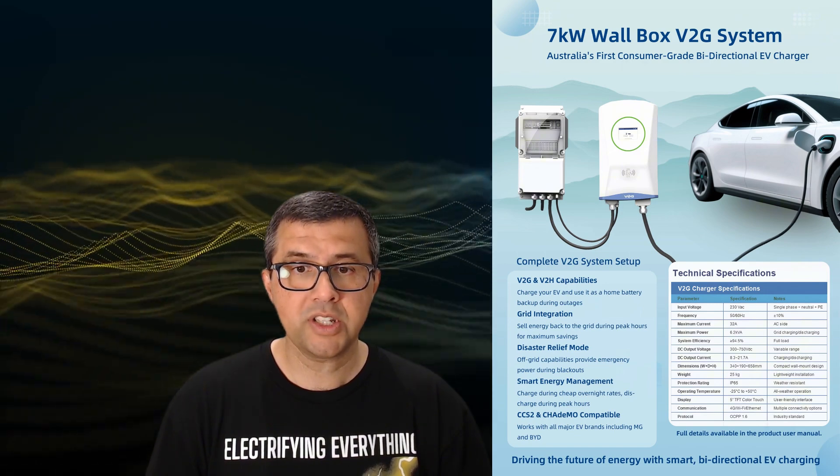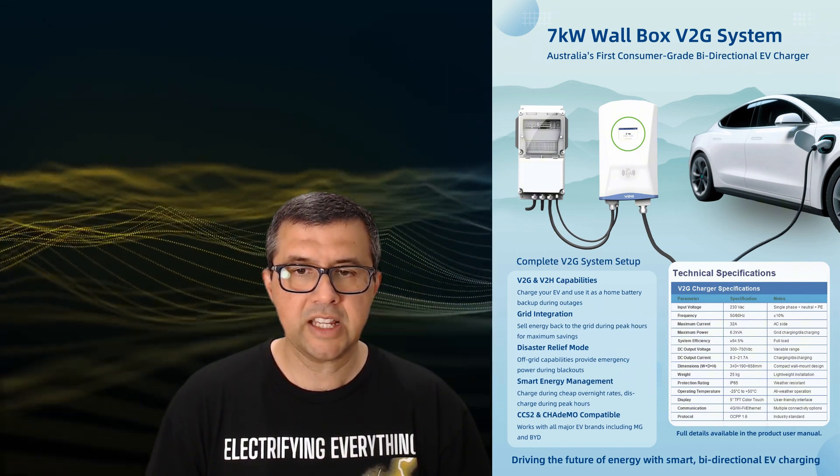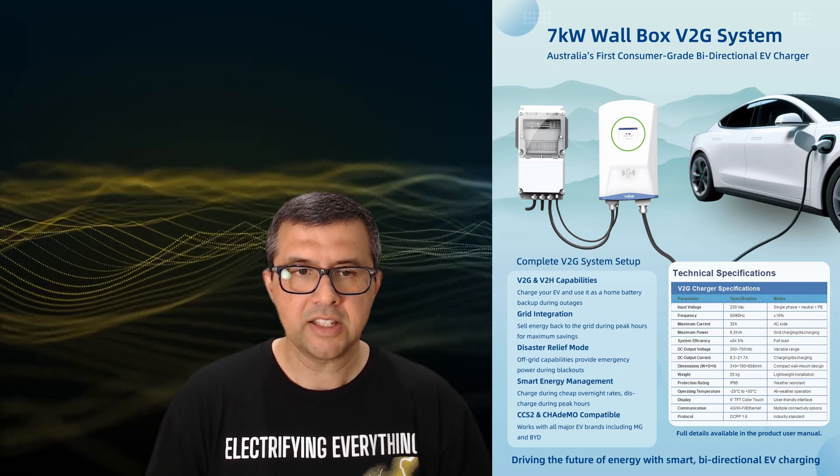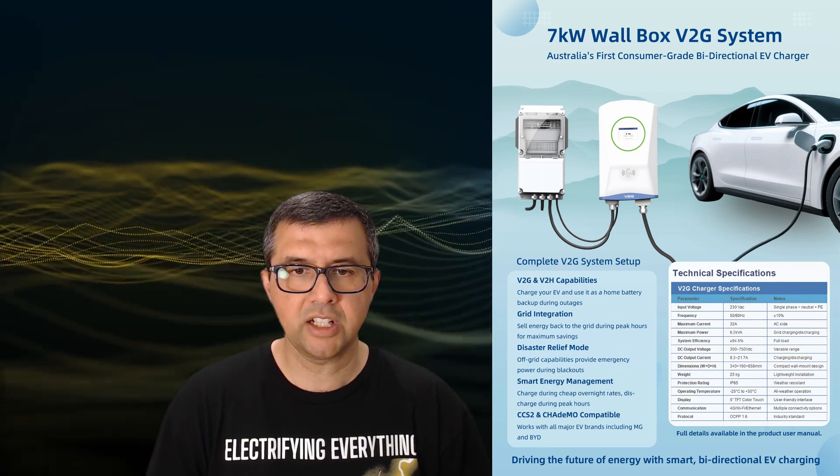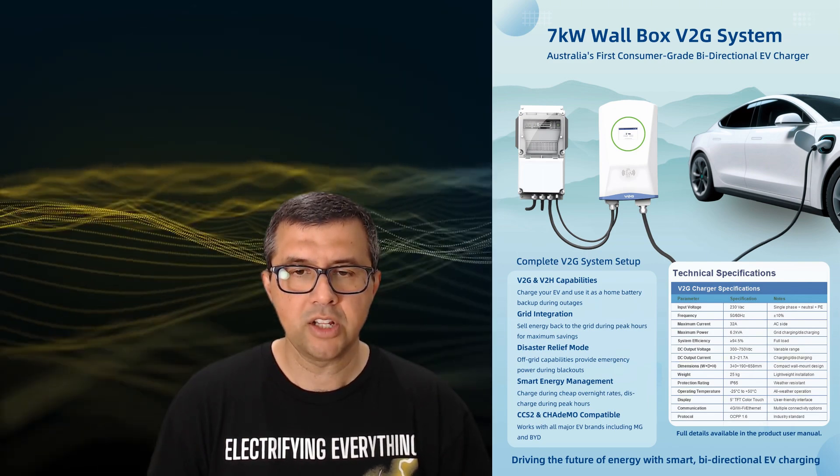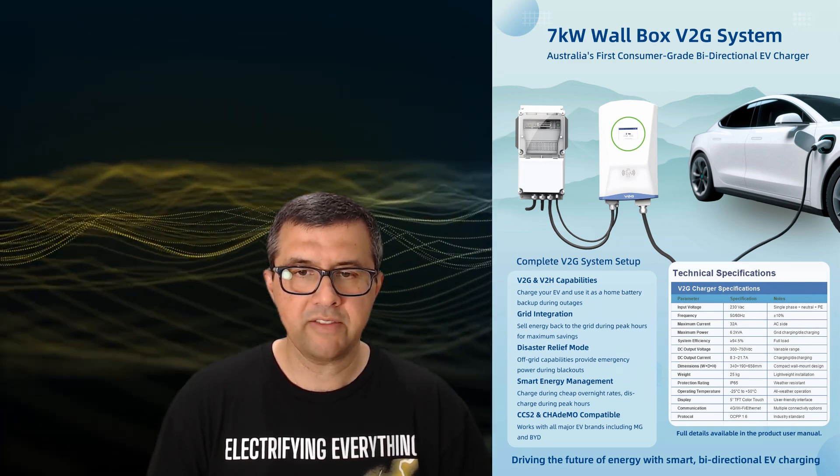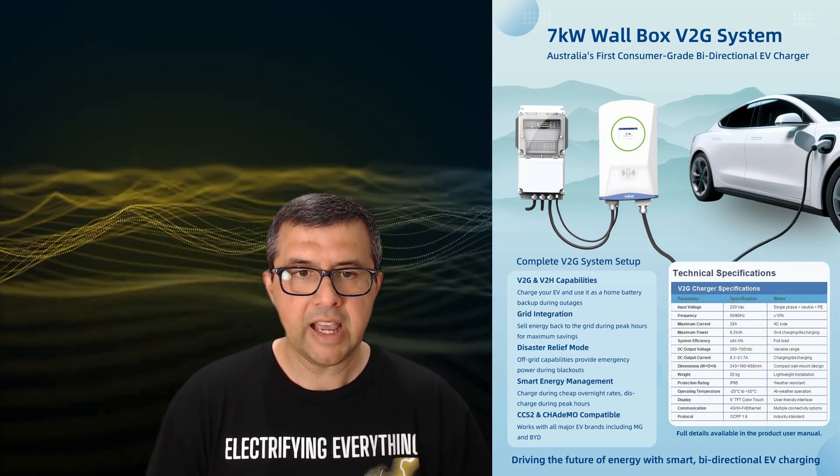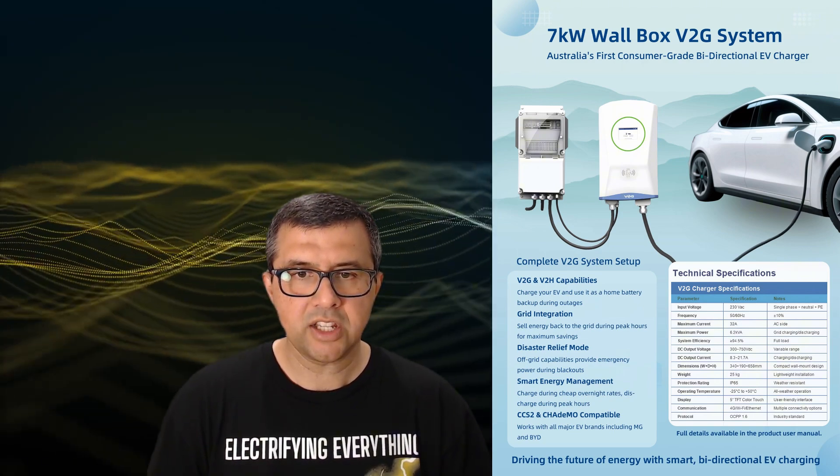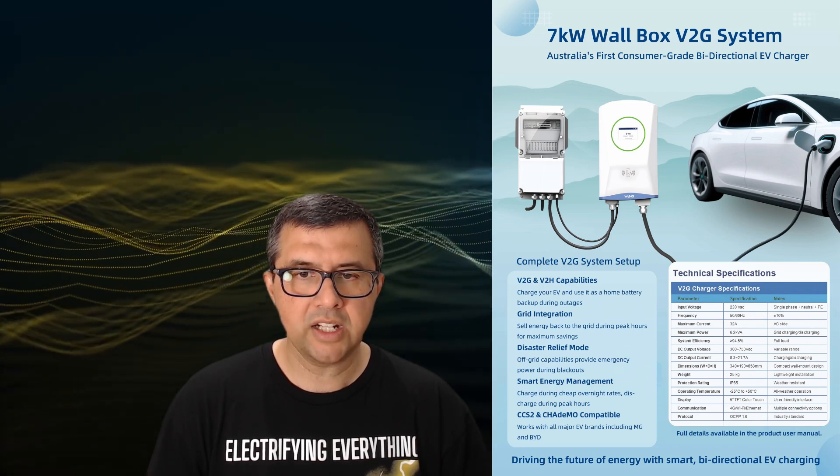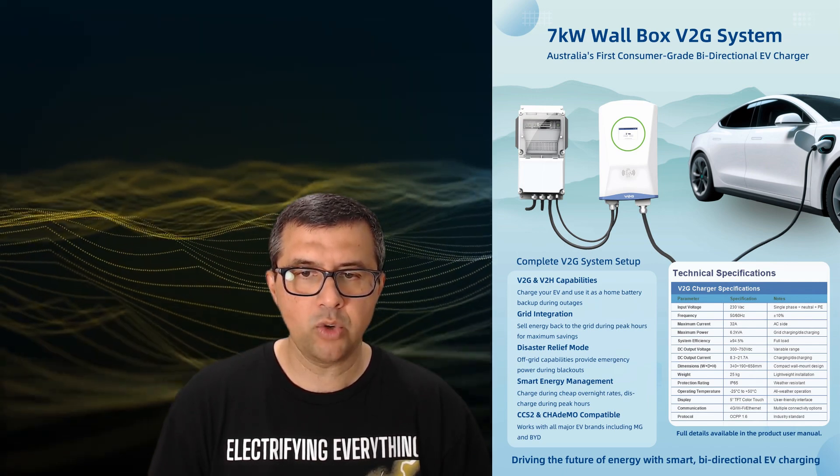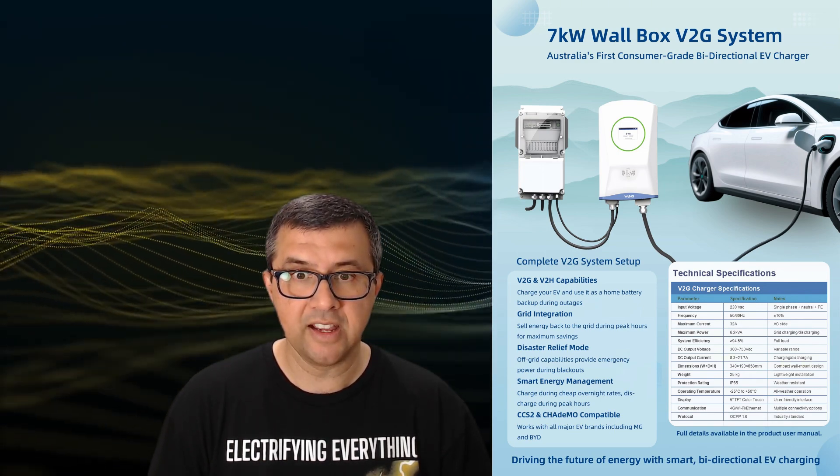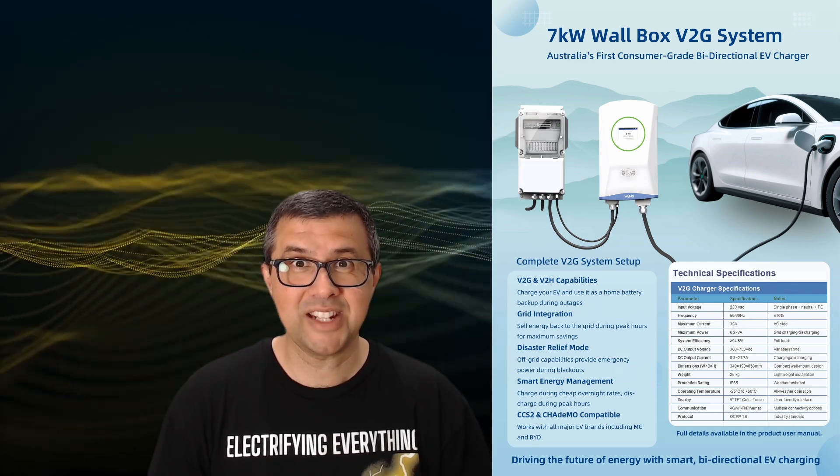The CCS2 charger supplies up to 7 kilowatts of DC power to an electric car over a 300 to 750-volt range, drawing 230-volt single phase at up to 38 amps, and is compliant with ISO 15118/DIN 70121 and OCPP 1.6J. This industry has a lot of acronyms and standards, but it is very useful to know.